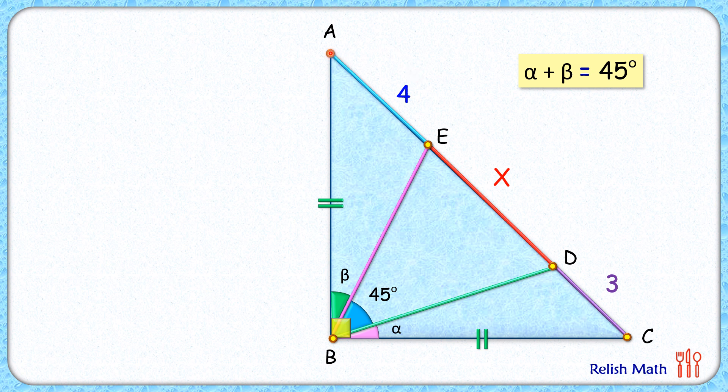Now let's make a copy of this triangle and rotate it anti-clockwise by 90 degrees across this vertex B. So this C will coincide with point A.